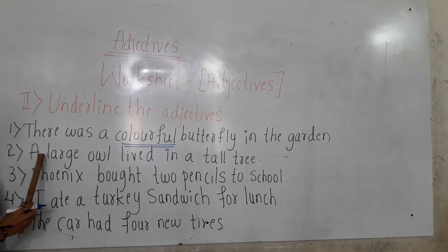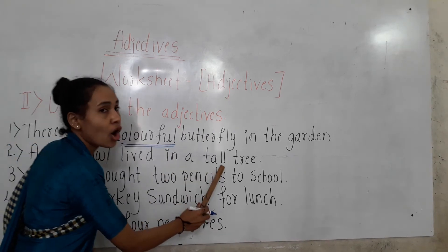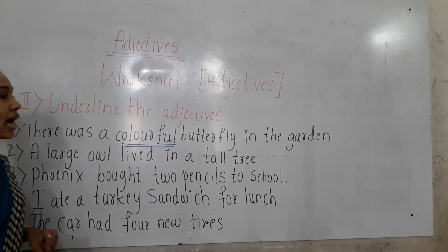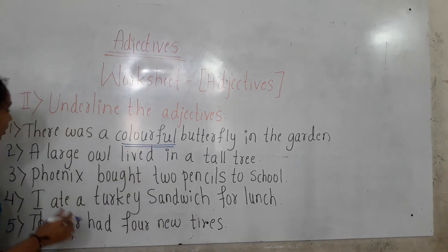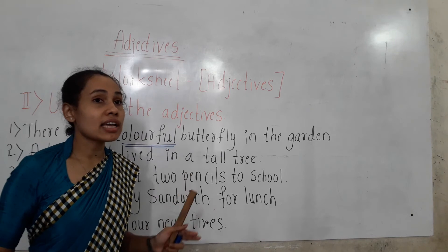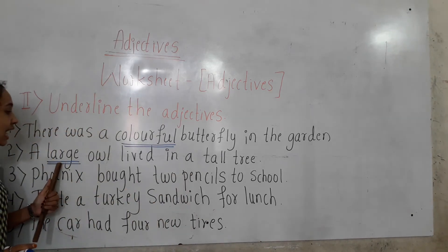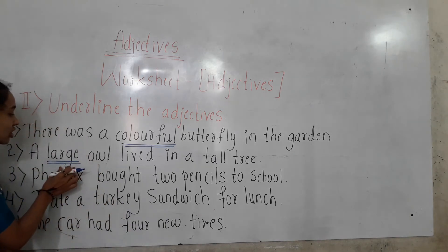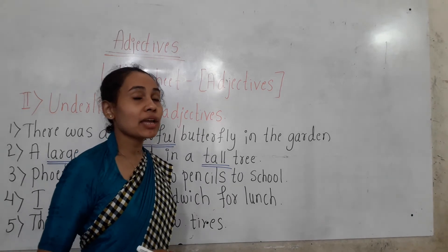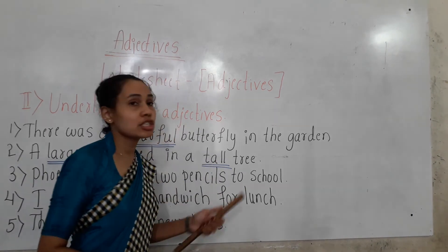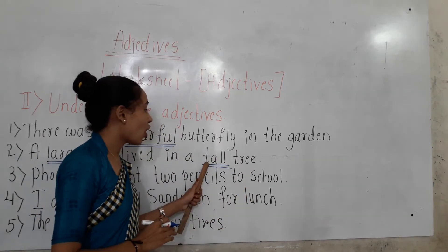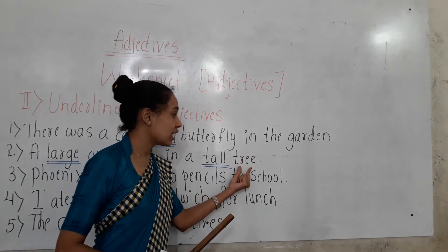Look at the second sentence: 'A large owl lived in a tall tree.' Here we have two adjectives. Large — 'large owl' — large is describing the size of the noun owl. Tall — 'tall tree' — tall is describing the size of the noun tree. So large and tall are the adjectives here.